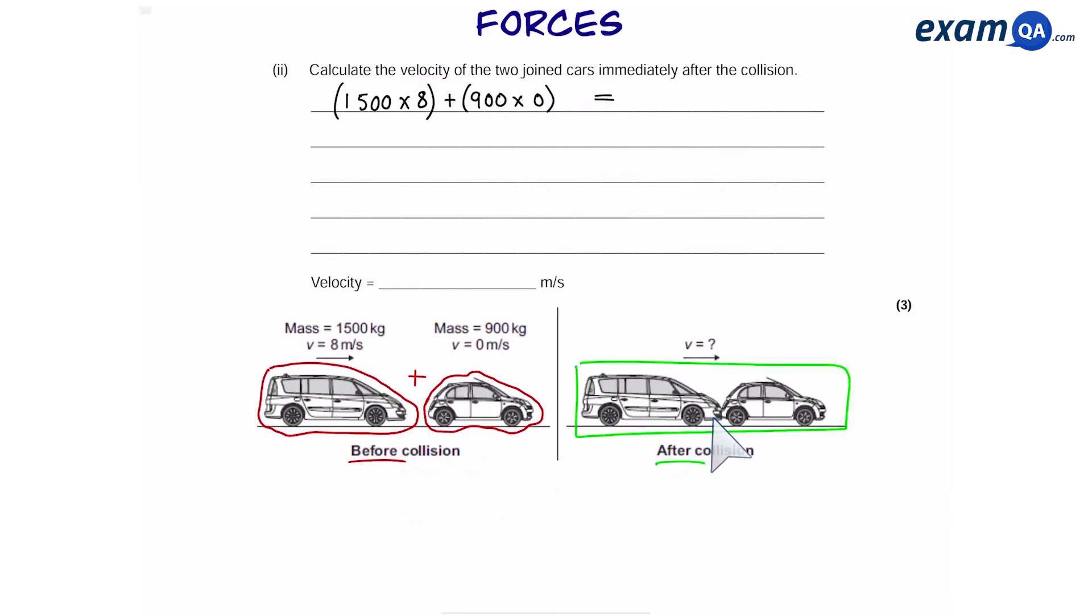So the total momentum before is going to be equal to the total momentum after. Now, after the collision, we actually have one object, or you can say that they are moving together as one object. So that means this object will have a mass of 2400. Basically, the mass of the two cars added together.